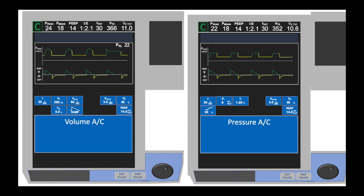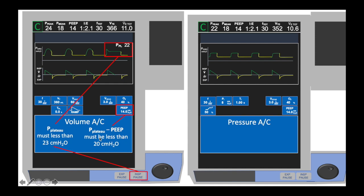Patients can be switched from a volume assist control mode or a pressure assist control mode to the VPAP-ST, as long as they fulfill certain criteria. For volume assist control, their plateau pressure — which you must check by performing an inspiratory pause maneuver — must be less than 23 centimeters of water. The driving pressure, which is the plateau pressure minus the PEEP, is the pressure required to inflate the lung to the desired tidal volume, and that must be less than 20 centimeters of water.